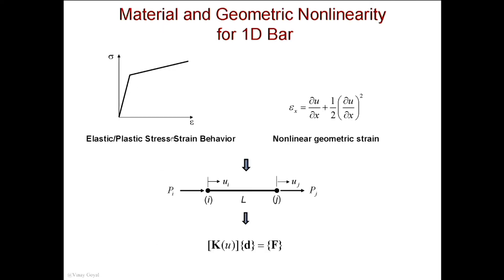Here's an example of a 1D bar. I could take a nonlinear stress-strain curve, or I can include a higher-order term — normally we just include the linear term, but for large deformations I can include this additional term. If I include this term along with a nonlinear stress-strain curve, then my stiffness matrix is going to depend on the deflection.